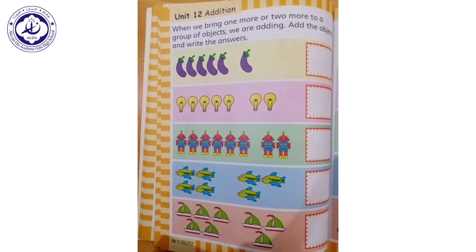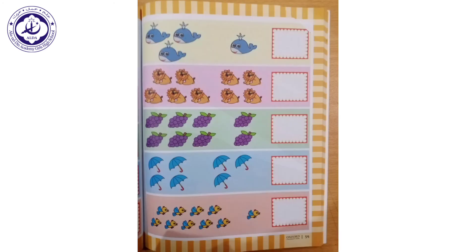When we bring one more or two more to our group of objects, we are adding. Add the objects and write the answer. There are some eggplants — count with me: one, two, three, four, and five. If we add one more eggplant, how many are together? One, two, three, four, five, and six. There are six eggplants altogether. Now page number 59.